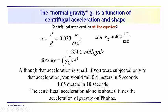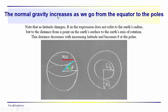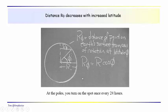And the centrifugal acceleration alone is about six times the acceleration of gravity on Phobos. So, this is a fairly large influence just from the centrifugal acceleration, the spinning of the Earth itself. The normal gravity increases as we go from the equator to the poles, this rotation relative to the axis of the Earth, this radius gets smaller and smaller as latitude gets higher and higher, until eventually it becomes zero at the poles. So, this 3300 milligals drops off to zero, the influence of centrifugal acceleration. So again, you weigh less at the equator, more at the poles due to this centrifugal acceleration. And at the poles, again, you would just turn on the spot every 24 hours.